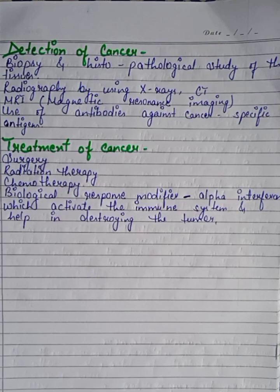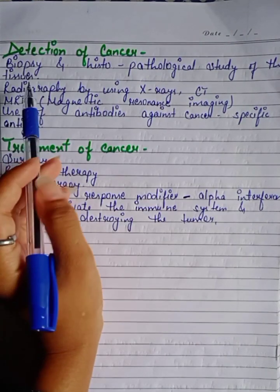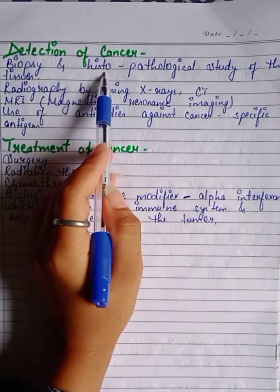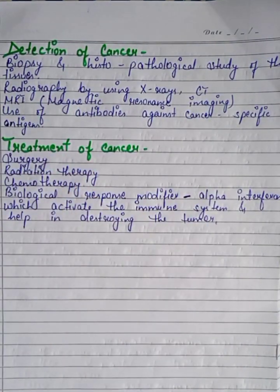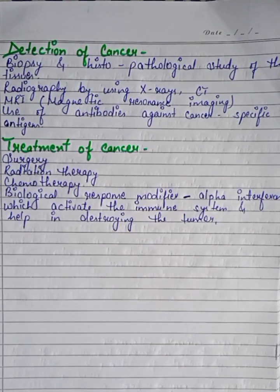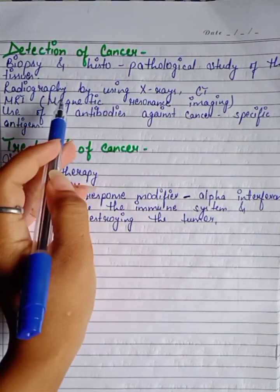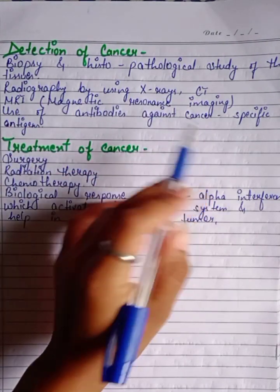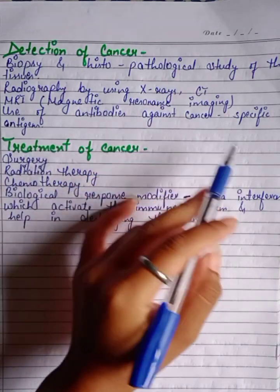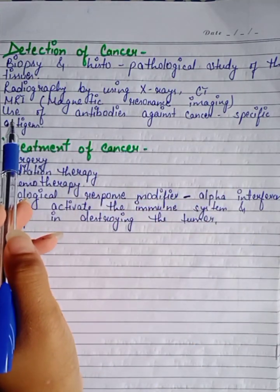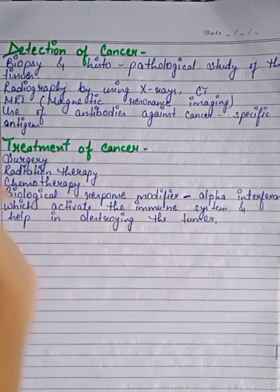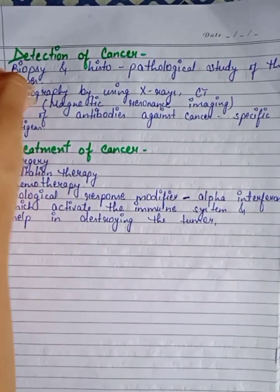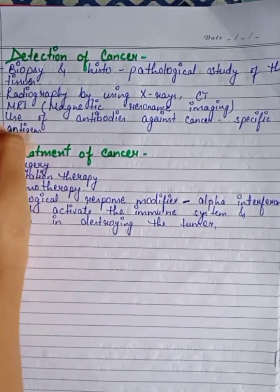How can cancer be detected? Methods include: biopsy and histopathological study of tissue, radiography using X-rays, MRI (Magnetic Resonance Imaging), and using antibodies against cancer-specific antigens.